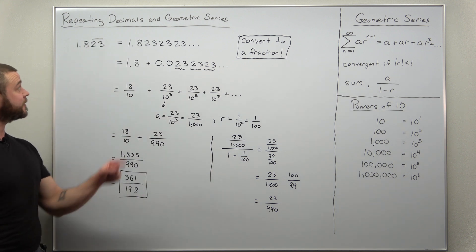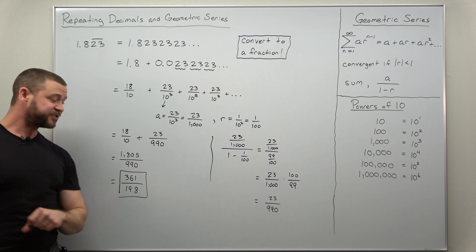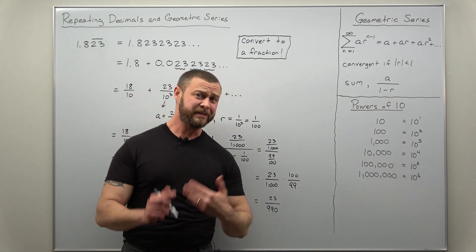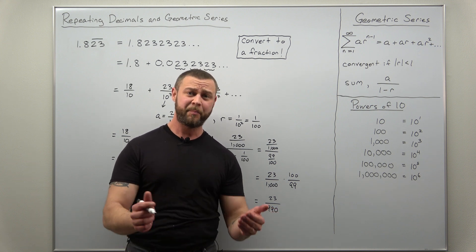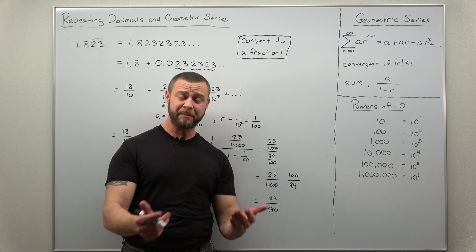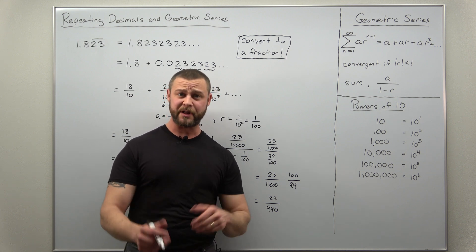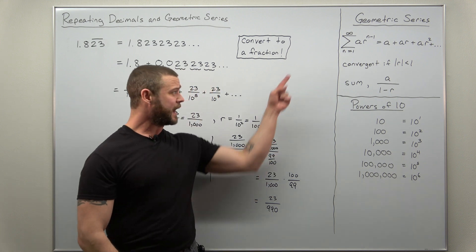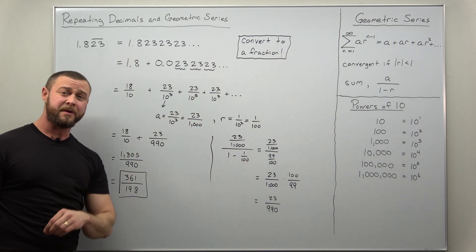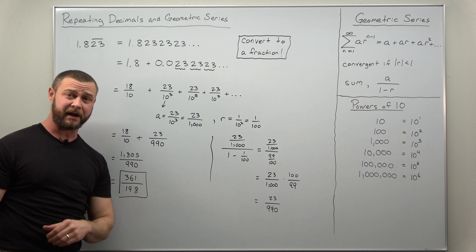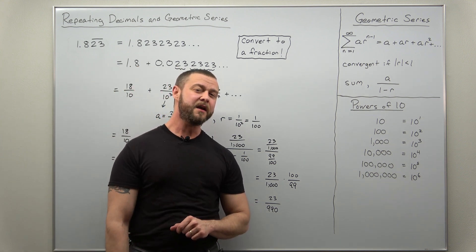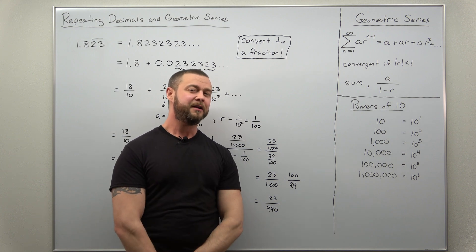And that is how we convert a repeating decimal into a rational number. I have no idea what the application of this is, but we're learning how to apply geometric series in some context, which I think is pretty cool. It's pretty cool to think that in Calculus 2 infinite series, we're relating back to some topics from earlier basic arithmetic — that's pretty interesting. If you enjoyed the video, support the channel: like and subscribe.